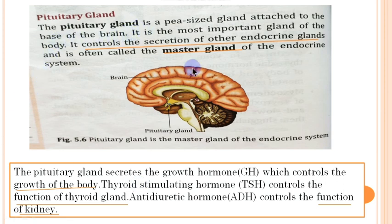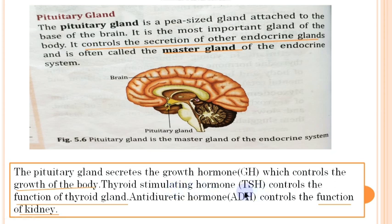The pituitary gland is present at the base of the brain. It is very small but controls the secretion of other endocrine glands and is known as the master gland of the endocrine system. It secretes trophic hormones that stimulate other endocrine glands to secrete their respective hormones. The first is growth hormone, which controls body growth by stimulating the lengthening of bones and soft tissues. The second is TSH, thyroid stimulating hormone, which controls the function of the thyroid gland so it can secrete thyroxine.